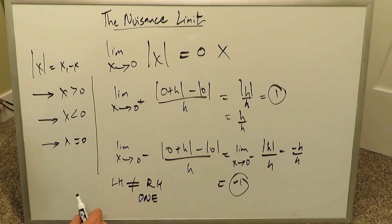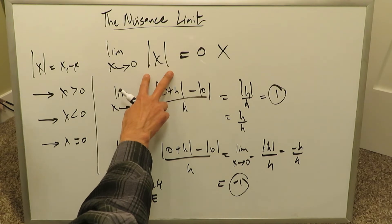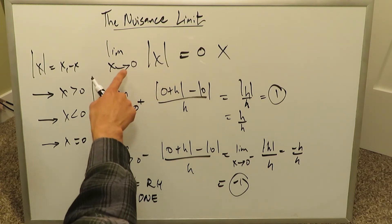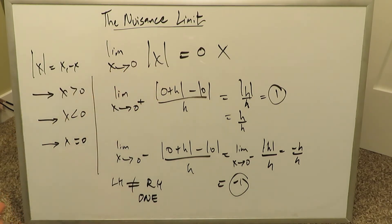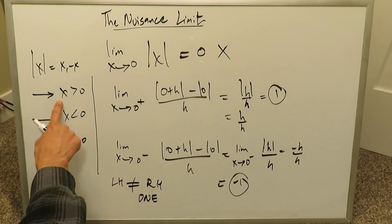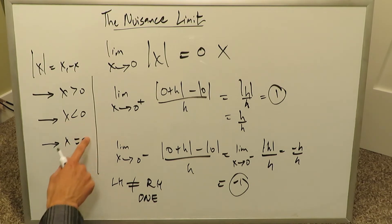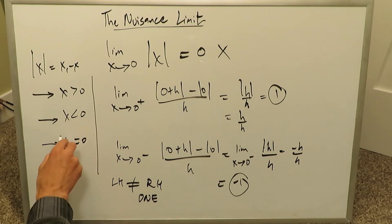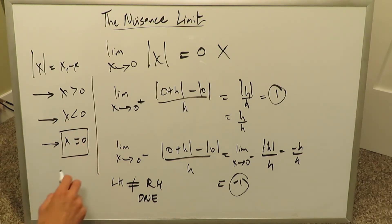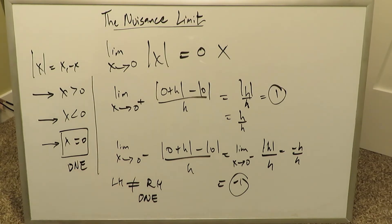The limit does not exist for the absolute value function specifically at x approaching 0. It exists for all x values larger than 0 and for all x values less than 0, but it does not exist at x equal to 0 — and that is the problem. We can graphically show you why this is a problem.